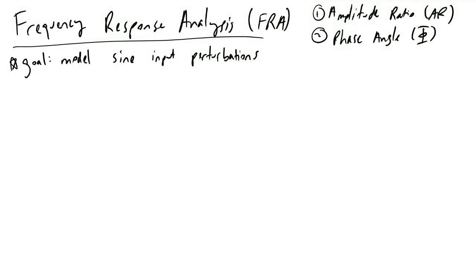Frequency Response Analysis, or FRA, is a method that process engineers will use to model how sine inputs will have an effect on outputs in your system. In this example, I will be going over the core concepts of amplitude ratio and phase angle and how we can calculate those given some kind of process transfer function.